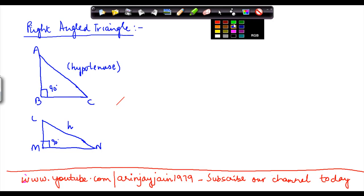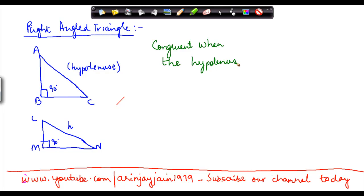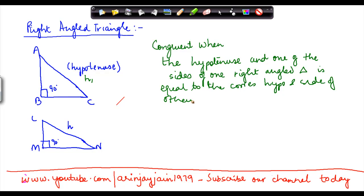Two right angled triangles are congruent when the hypotenuse, let us say this is H and this is H1, and one of the sides of one right angled triangle is equal to the corresponding hypotenuse and side of other right angled triangle.